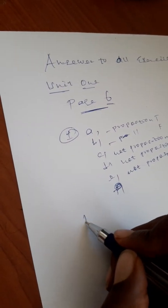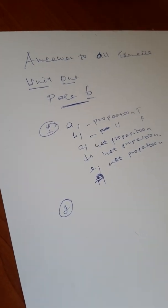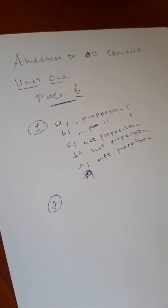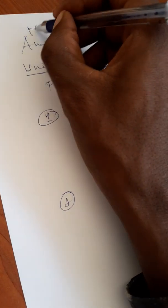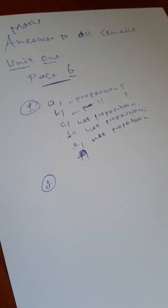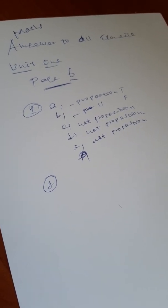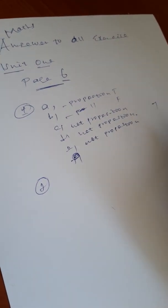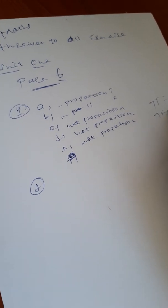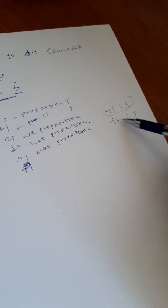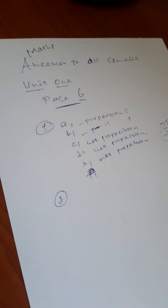Now let's look at the negation of each of the following statements. Remember: the negation of true is false, and the negation of false is true. The negation gives the opposite truth value.